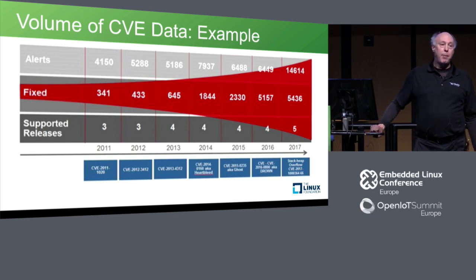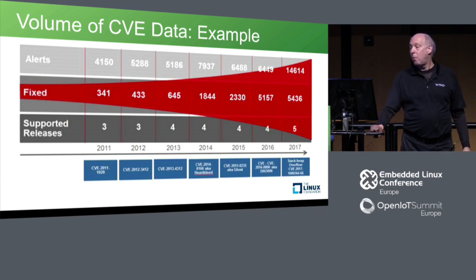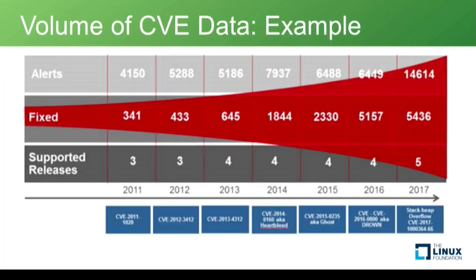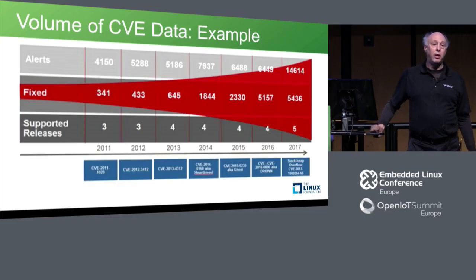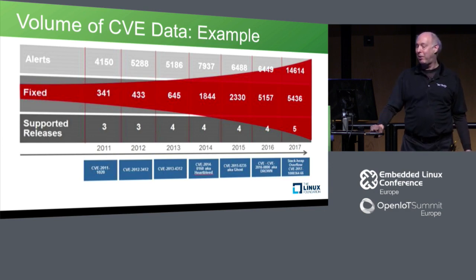Just as an example of volume growth: it's been growing, almost doubling the last two years. In one data set, there were 14,600 CVEs in 2017, of which 5,400 were actually defects against our particular system. Some of those spread across different releases — in this case five releases for that period. The volume is just increasing, not quite exponentially, but pretty fast.